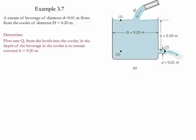Example 3.7. In this example, we have a stream of a beverage which is flowing from a cooler. Both of the diameters are given. We need to determine the flow rate from the bottle into the cooler in order to maintain a depth to be constant.